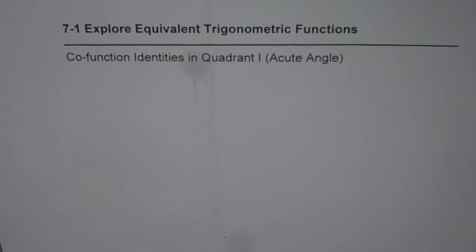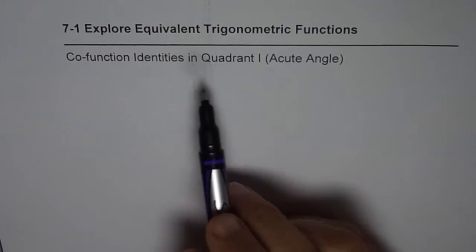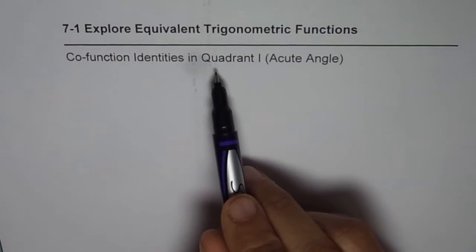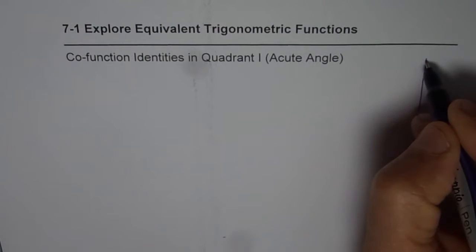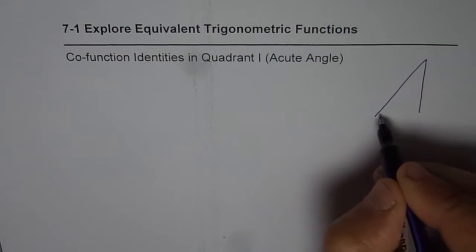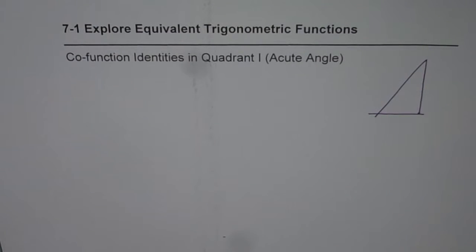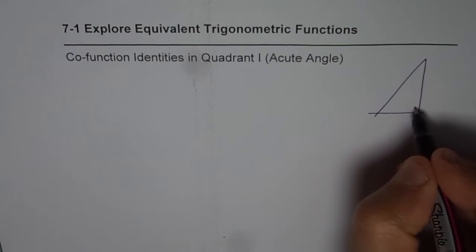I'm Anil Kumar and on request of my students I'm trying to explain co-function identities once again. I've made two videos on co-function identities — this one covers acute angles in quadrant 1, and in the next video we will consider obtuse angles or any general angle. Let us first understand the very basics of co-function identities.